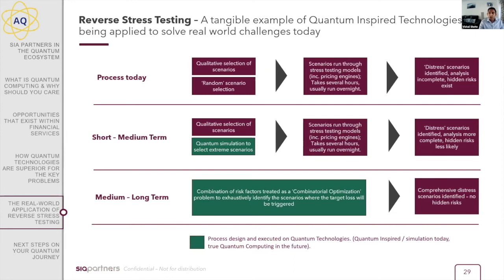How will quantum technologies help with this problem? In the short term, quantum simulation techniques can be used to reduce the number of scenarios assessed by traditional stress tests. Rather than selecting scenarios at random or via Monte Carlo, quantum simulation better identifies the characteristics of the system with fewer samples — identifying scenarios more likely to cause disruption or reach the target loss — and those are then sent into the full stress testing model. In the long term, reverse stress testing becomes a combinatorial optimization problem: finding the combination of movements that give the greatest loss. Quantum simulation can actually be done today for this purpose.